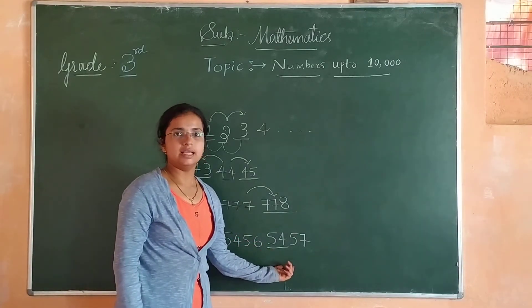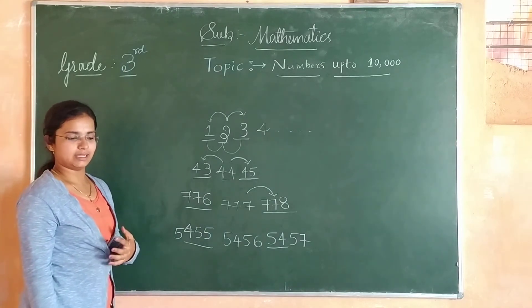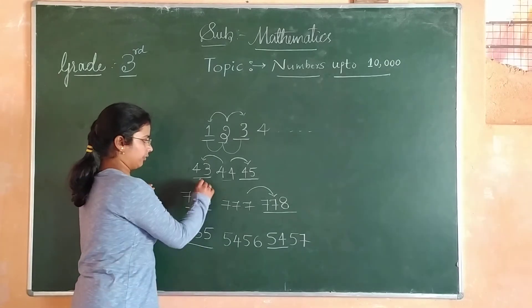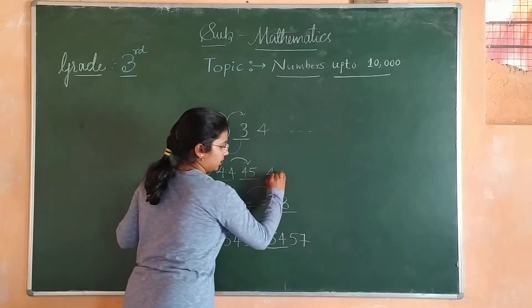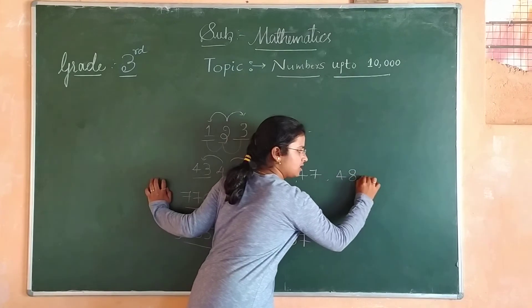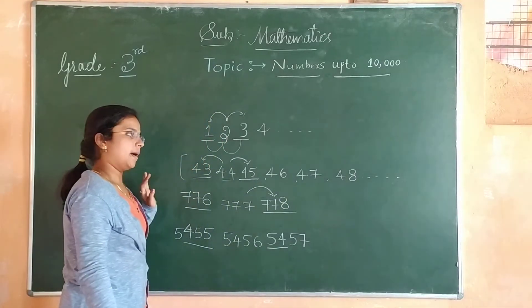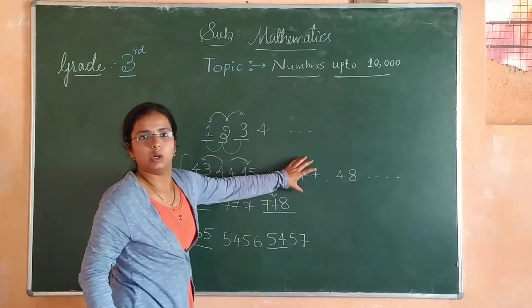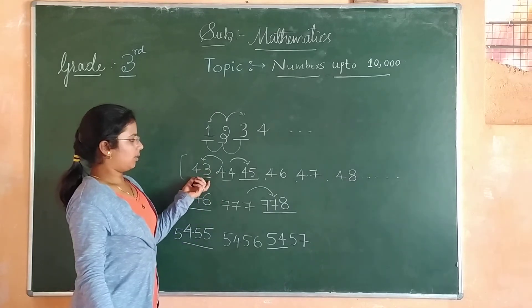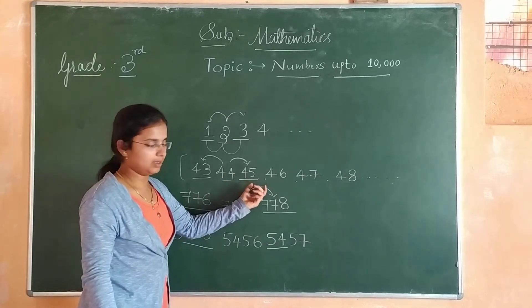We have already discussed what consecutive numbers are — the numbers which follow one after another are called consecutive numbers. For example: 43, 44, 45, 46, 47, 48 and so on. The consecutive number of 43 is 44, the consecutive number of 44 is 45, and the consecutive number of 45 is 46.